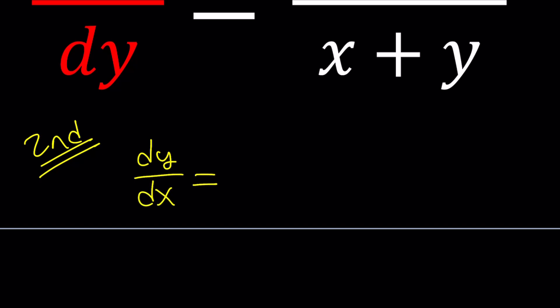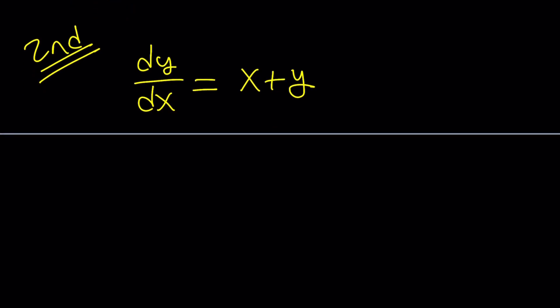The right-hand side just becomes x plus y. By doing this, we actually got dy over dx, which is the derivative of y with respect to x, which can then be written as y prime. So y prime equals x plus y.